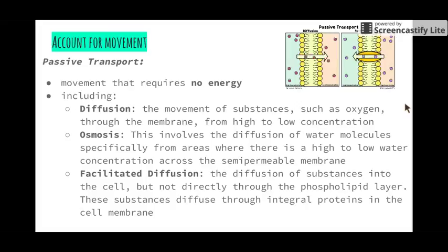As part of the dot point, we need to be able to account for why particular movements take place in and around the cell membrane. We have two different types of transport that take place across our cell membrane: passive transport and active transport. Passive transport is movement that requires no energy. If we say somebody is passive aggressive, they're not overtly aggressive, they're just making sly comments, so they're not putting much effort in.